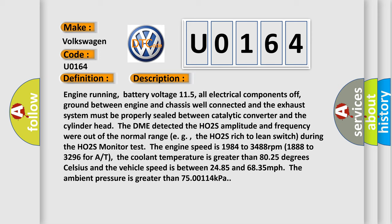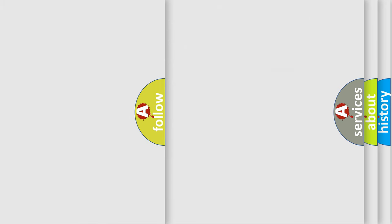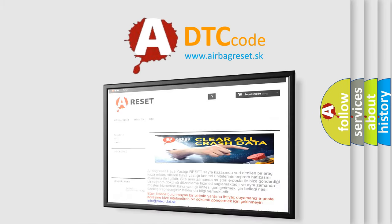This diagnostic error occurs most often in these cases: HO2S before the three-way catalytic converter is contaminated due to presence of silicone in fuel — run the engine for 3 minutes at 3,500 RPM as a self-cleaning effect. HO2S signal circuit open, leaks present in the exhaust manifold or exhaust pipes. HO2S is damaged or has failed. The Airbagreset website aims to provide information in 52 languages. Thank you for your attention and stay tuned for the next video.